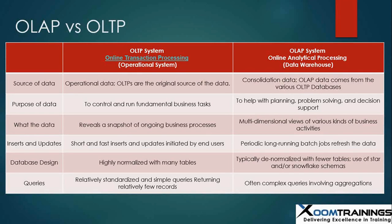On the OLTP system we query a very small amount of data — for example, today's sales. But on the OLAP side, queries are often very complex, aggregating millions of rows to get results out of our business data. This was the difference between OLAP and OLTP.